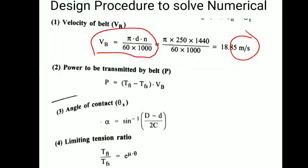Second step is to find out the power to be transmitted. First of all, you need to write the given data and then we'll go to our steps. Power to be transmitted, as I told you in theory: P equals (T1 minus T2)×V.